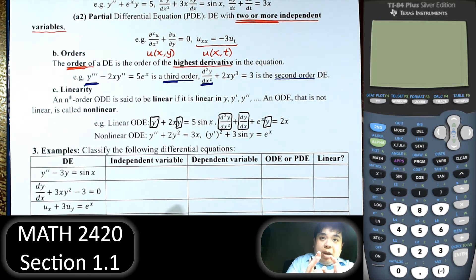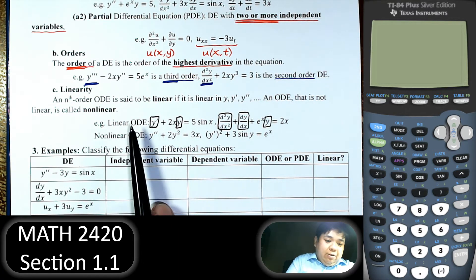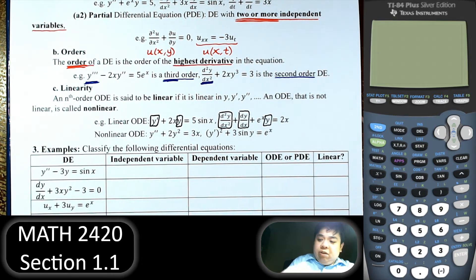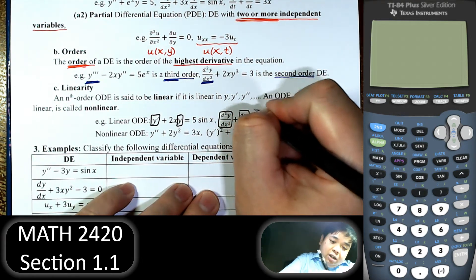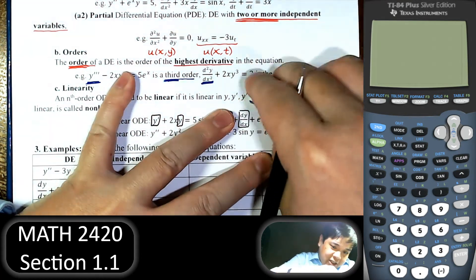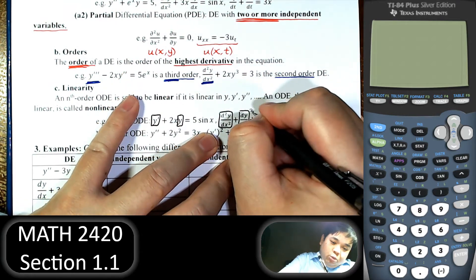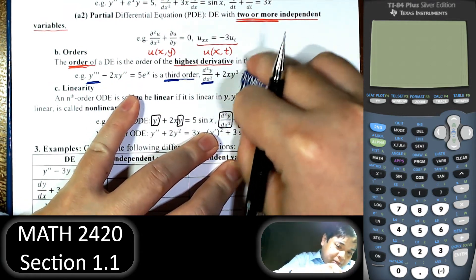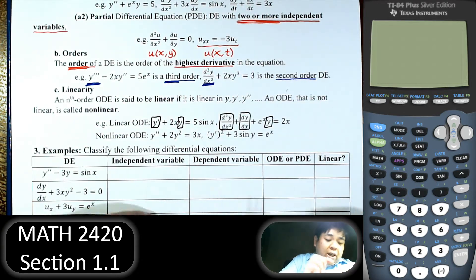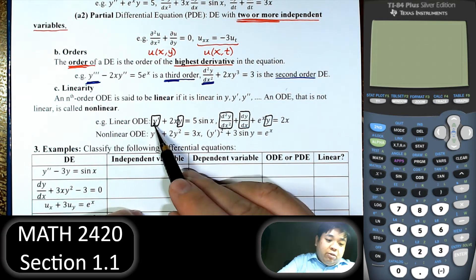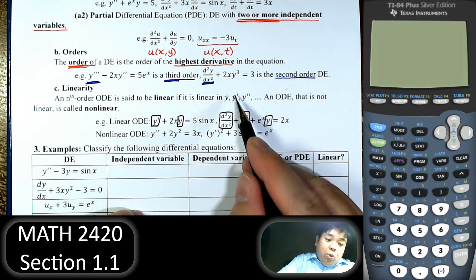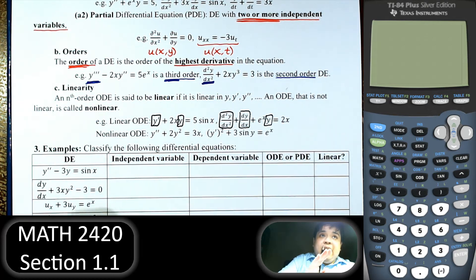Just focus on the dependent variable and its derivatives — you see all of them are not raised to any power and don't have any function applied. If we have a square here, it is not linear. Or a cube — it is not linear. Or a cube root or square root — anything like that. We need everything raised to the first power only, so all functions and derivatives of the dependent variable are raised to the first power. Then it is linear.